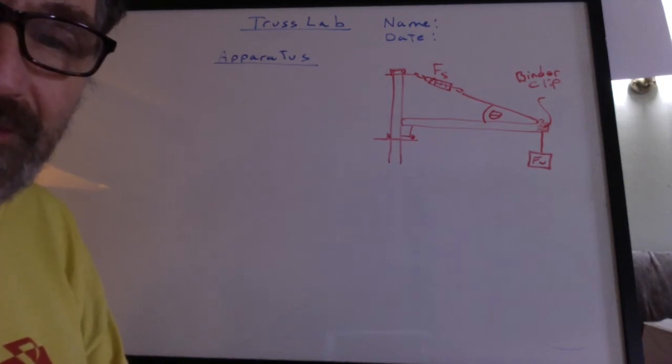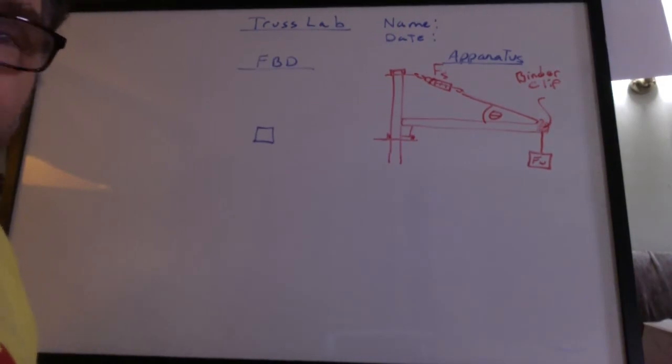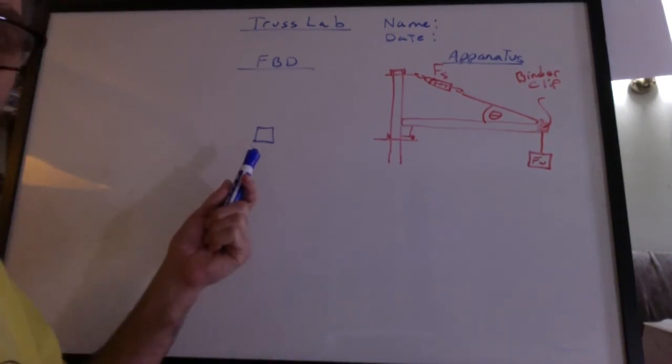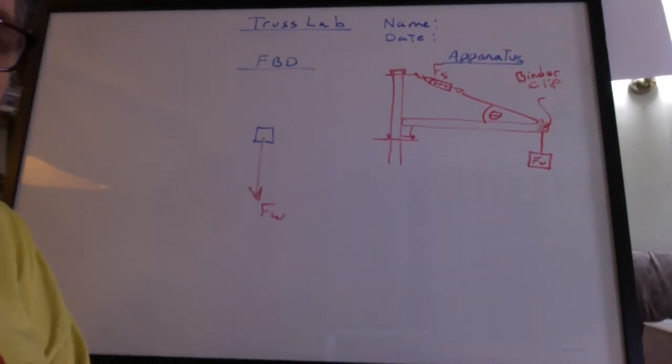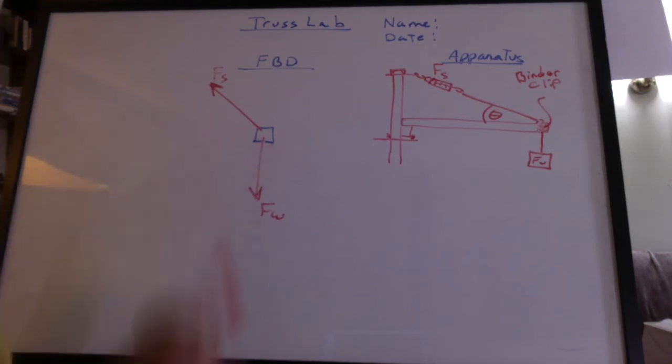So all these forces acting on the binder clip have to add up to zero. Time for a free body diagram. The body we're talking about is the binder clip. It doesn't move. What's the most obvious force acting on that binder clip? The weight of your object. What's another force that's obvious? The force of the scale pulling through the string.